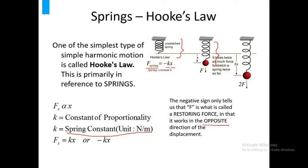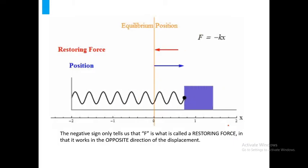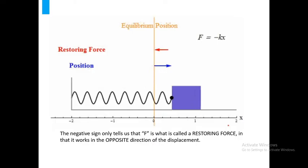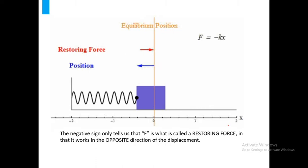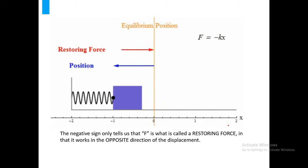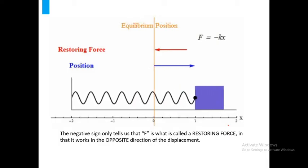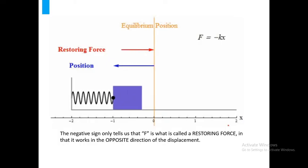They are opposite to each other, the restoring force and the direction of displacement. For example, the spring is moving to the right, the restoring force is going to the left. If the spring is moving to the left, the restoring force is going to the right. That's why there is a negative sign. Look at the animation of the spring. As it goes to the right, restoring force is directed to the left. As it goes to the left, the restoring force is the opposite direction, in this case to the right.